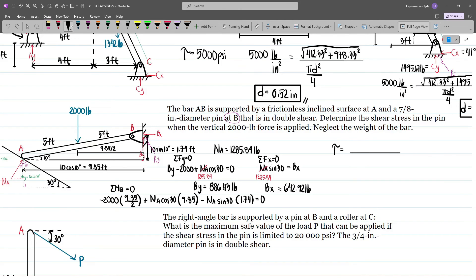And so this is 642.92 squared plus 886.43 squared divided by pi over 4 times D squared. However, take note here that our pin at B is in double shear. And so we will multiply this by 2.